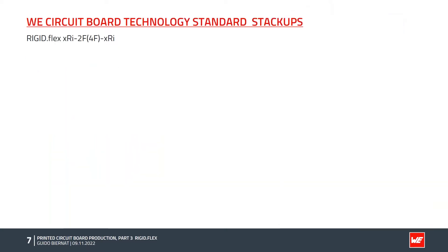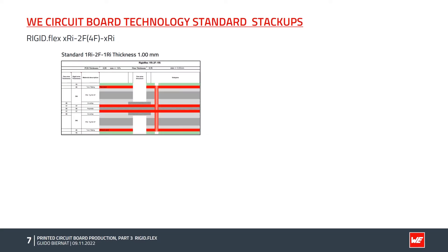Now I'll present the Virtual Electronic Circuit Board Technology standard stack-ups. The first is the absolute standard 4-layer PCB with a 1RI 2F 1RI construction — one rigid layer, two flex layers, and one rigid layer in the flex area. Example thicknesses are 1 mm and 1.5 mm, though other thicknesses are possible.